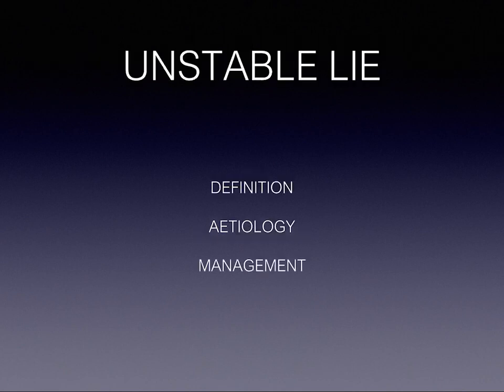Unstable lie is defined as the case in which the fetus changes its lie frequently — from transverse lie to oblique to longitudinal and so on.